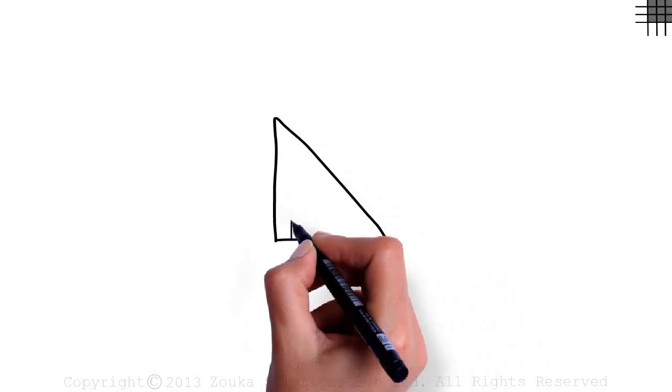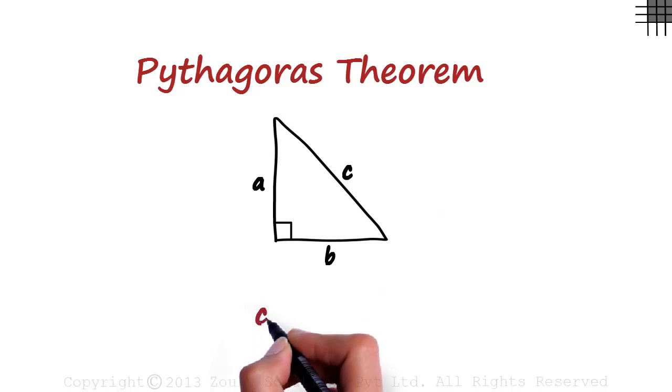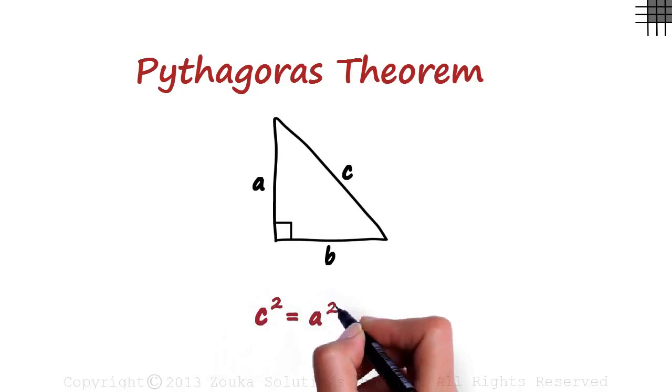In the previous video, we saw that if we have a right-angled triangle like this, with sides A, B and C, then the Pythagoras theorem says that C squared will equal A squared plus B squared. Let's move on to a new page to understand why.